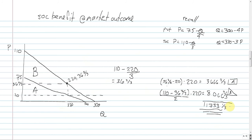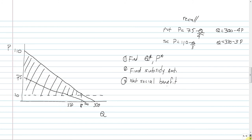So this right here is our net social benefit at the market outcome. That got most of you, I would say, on the test.